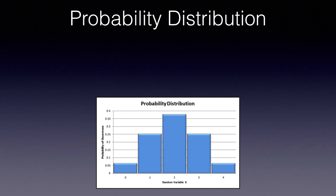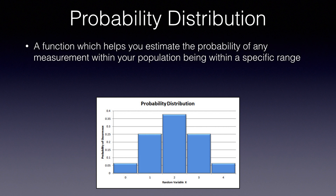So now it's time to talk about probability distributions. A probability distribution is a function that helps you estimate the probability of any measurement within your population being within a specific range. It is much easier to think with discrete variables, and we can turn continuous values into discrete ones by dividing them into buckets — say lemon weight rounded to the nearest gram, or even 5-gram buckets. One important aspect of probability distributions is that measurements need to be independent of each other. A coin toss is a perfect example — even if you get 5 heads in a row, the next toss still has a 50-50 chance of being either heads or tails.